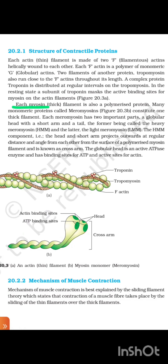Each myosin thick filament is also a polymerized protein. Many monomeric proteins called meromyosins constitute one thick filament. Each meromyosin has two important parts: a globular head with a short arm and a tail, the former being called heavy meromyosin (HMM) and the latter light meromyosin (LMM). The head and short arm project outward at regular distances and angles from the surface of a polymerized myosin filament and are known as cross arms. The globular head is an active ATPase enzyme and has binding sites for ATP and active sites for actin.